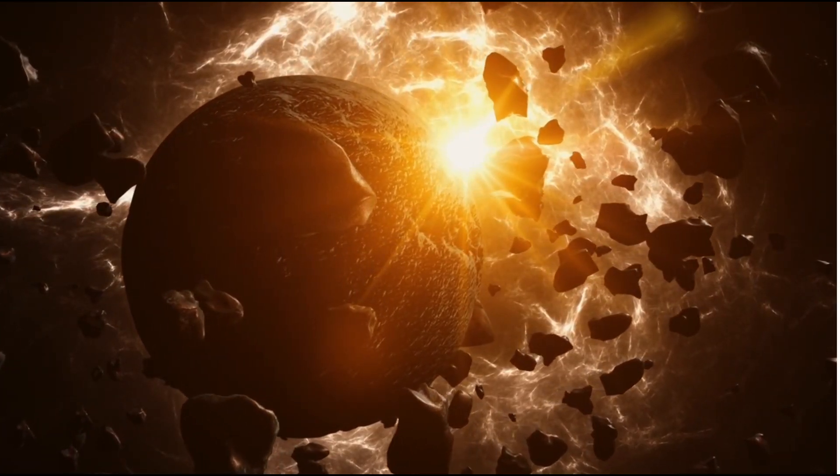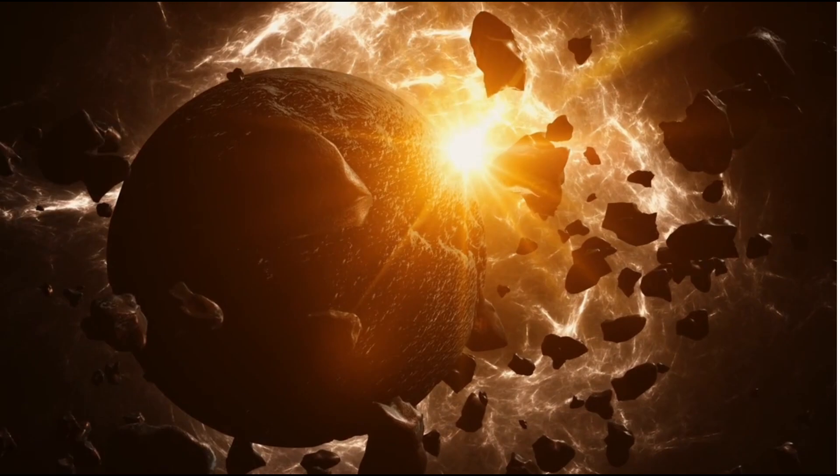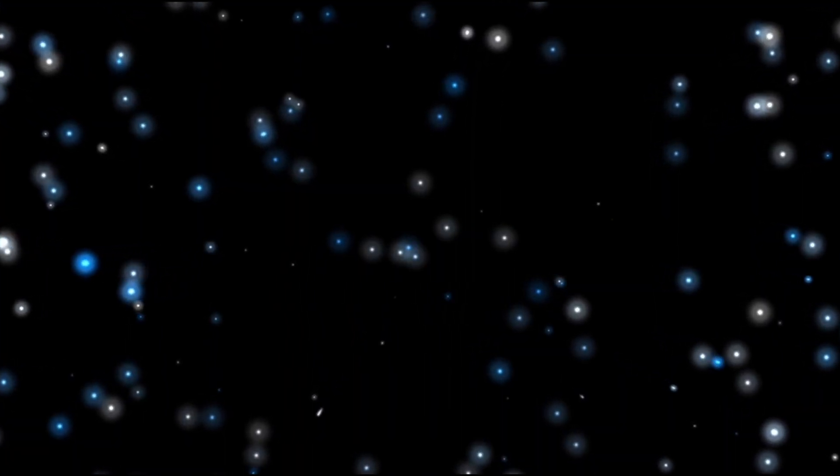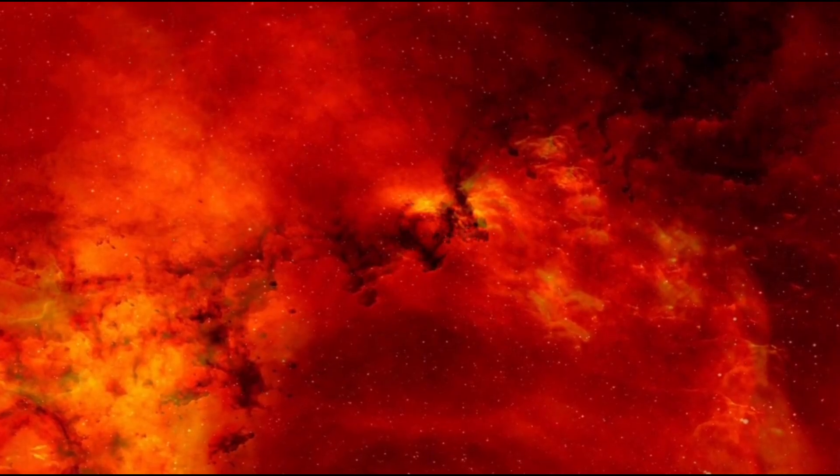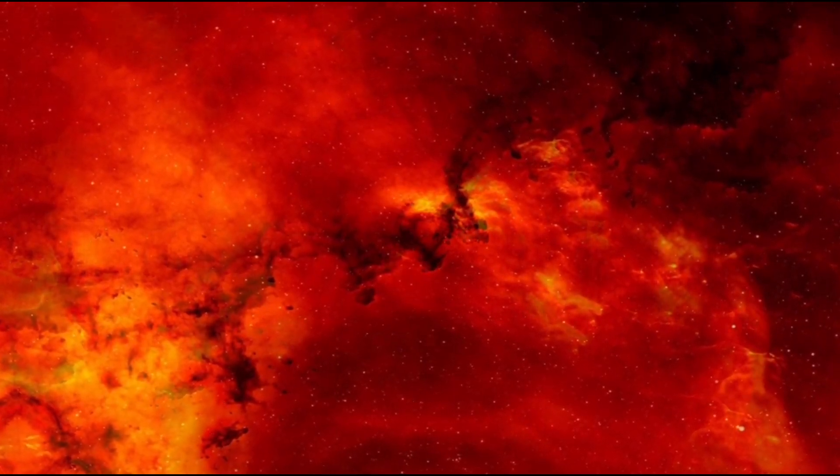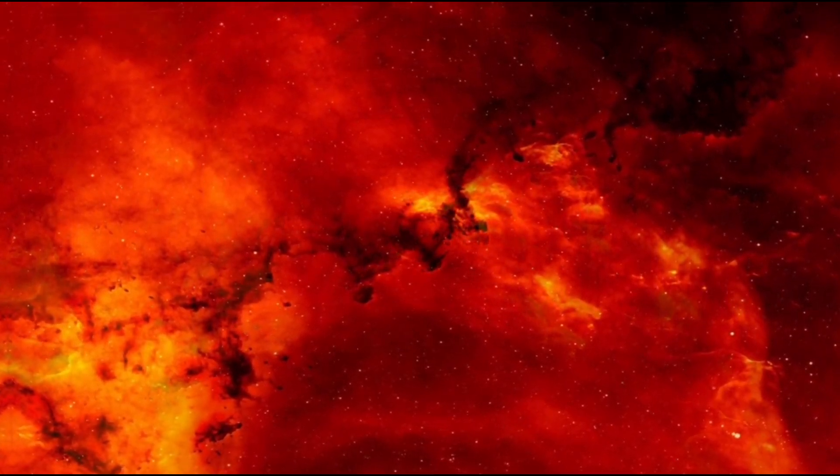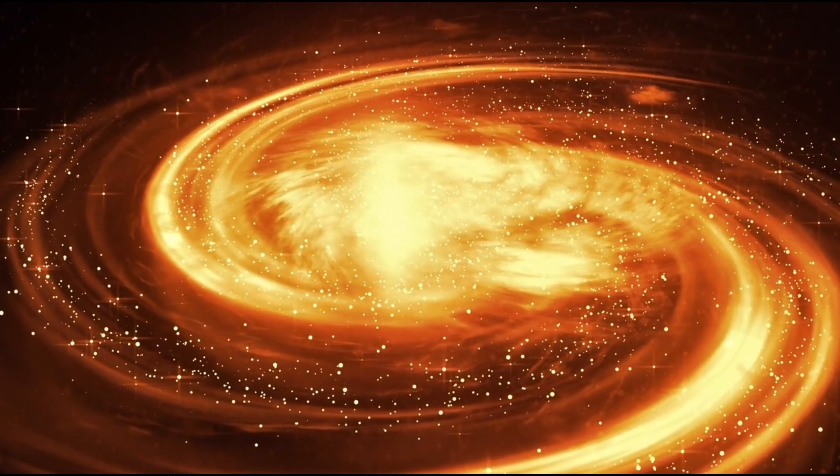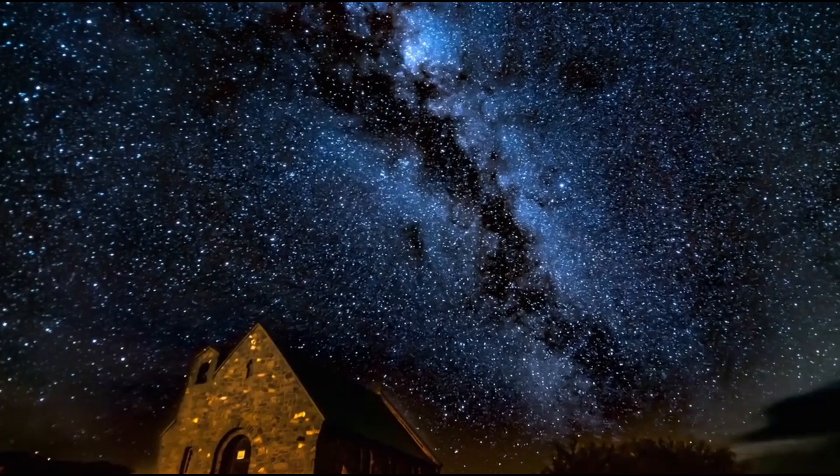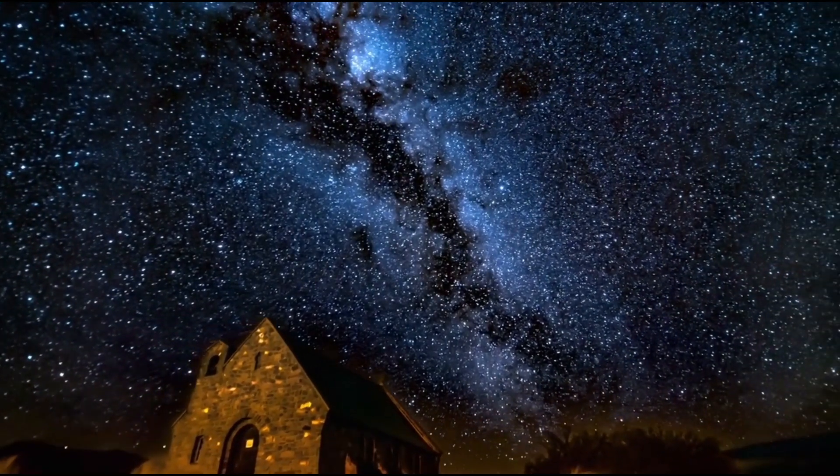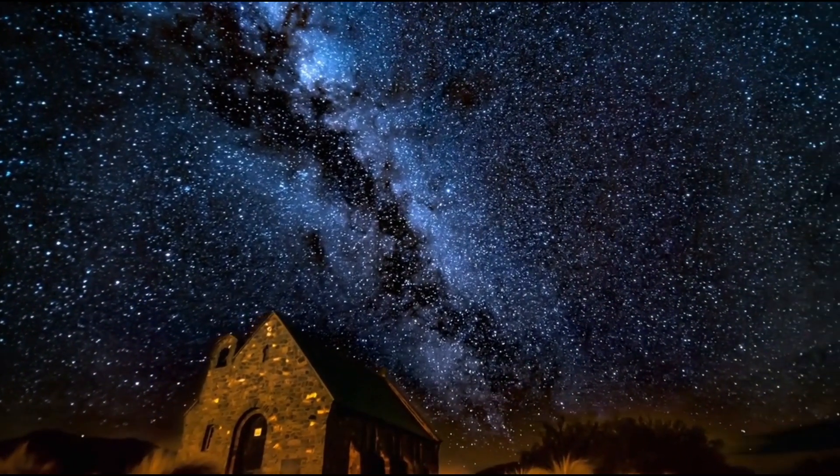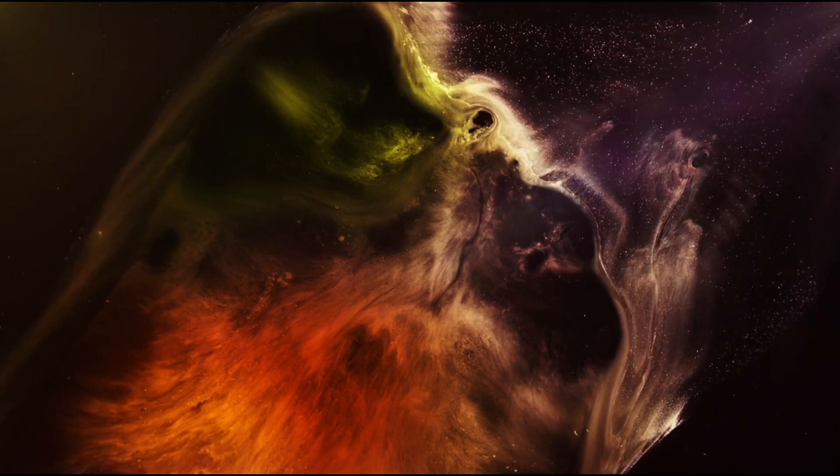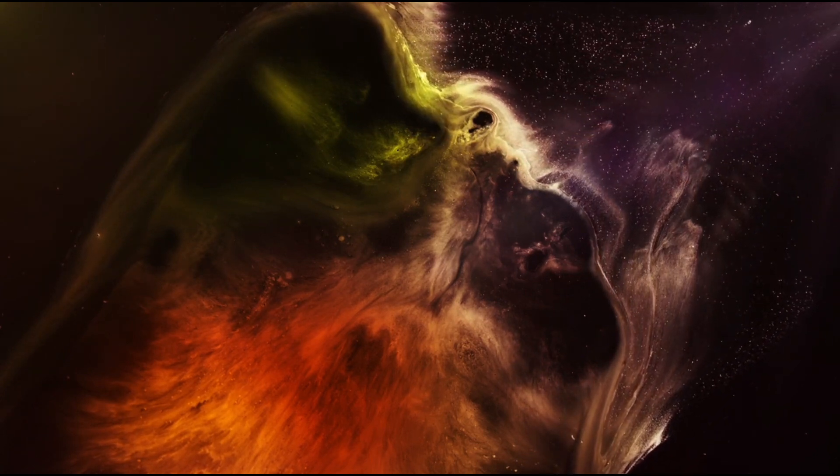Previously, the habitable zone was thought to extend farther from the galactic center, but new evidence suggests that the inner regions, where stars are born and die quickly, may be far more hazardous than previously believed. The frequent supernovae in these areas could irradiate planets in their vicinity, making them inhospitable for life. This has led scientists to propose that the outer boundaries of the galactic habitable zone may extend farther than originally thought.